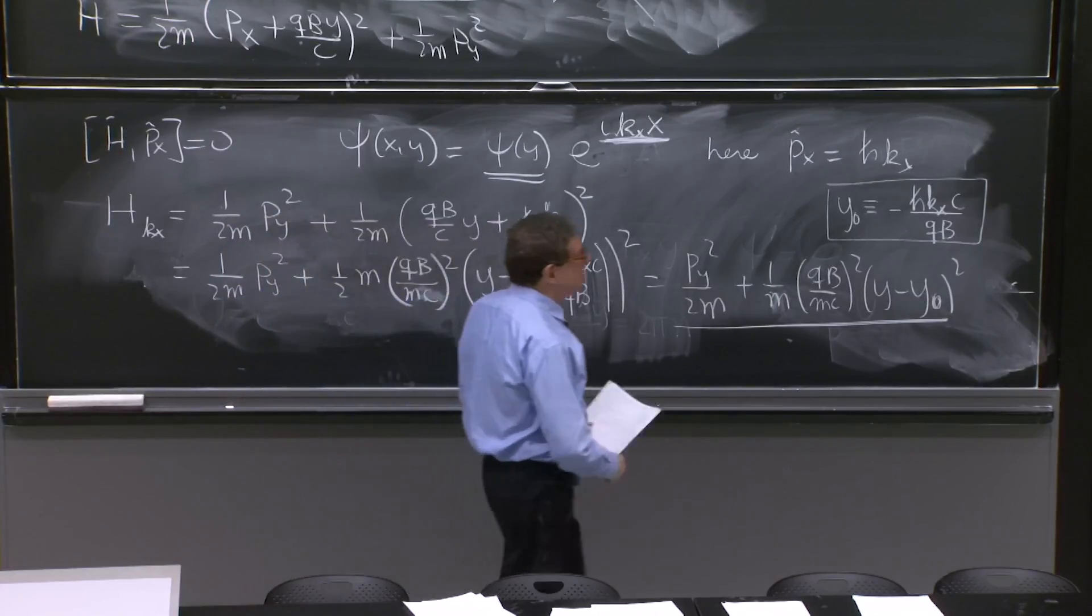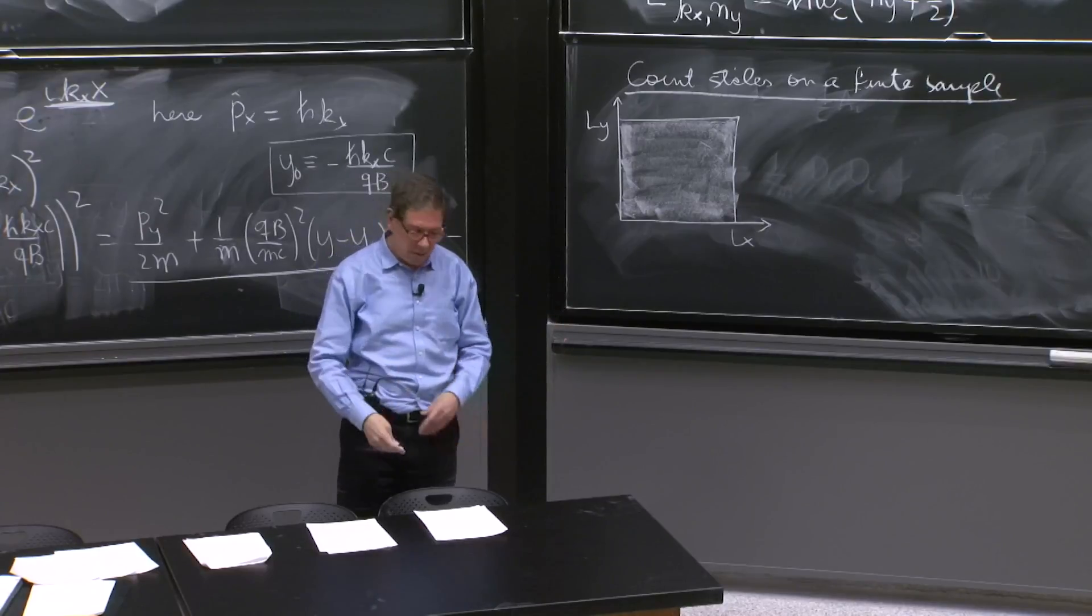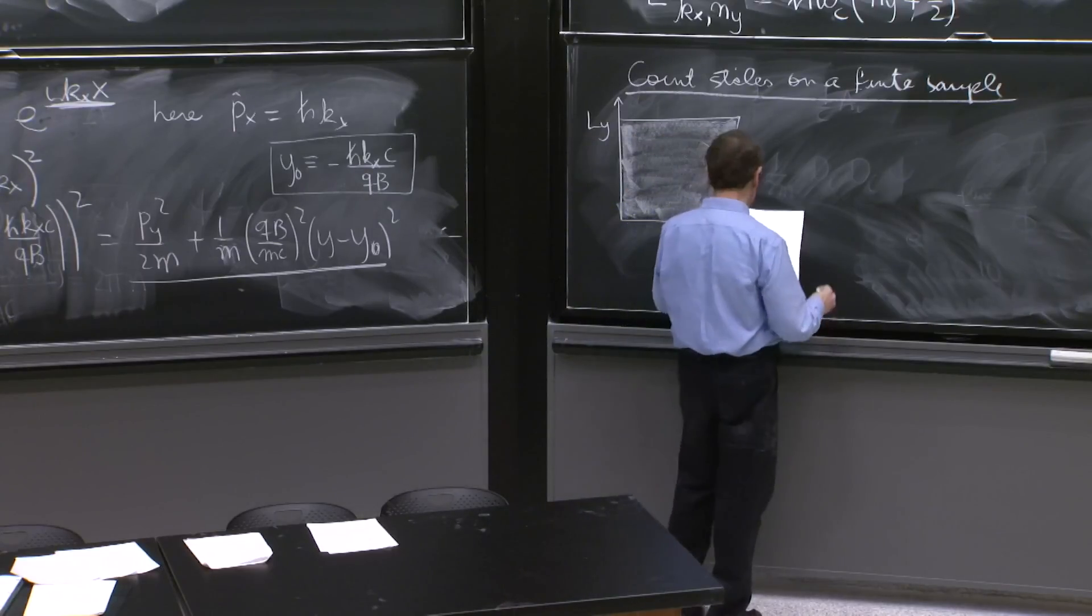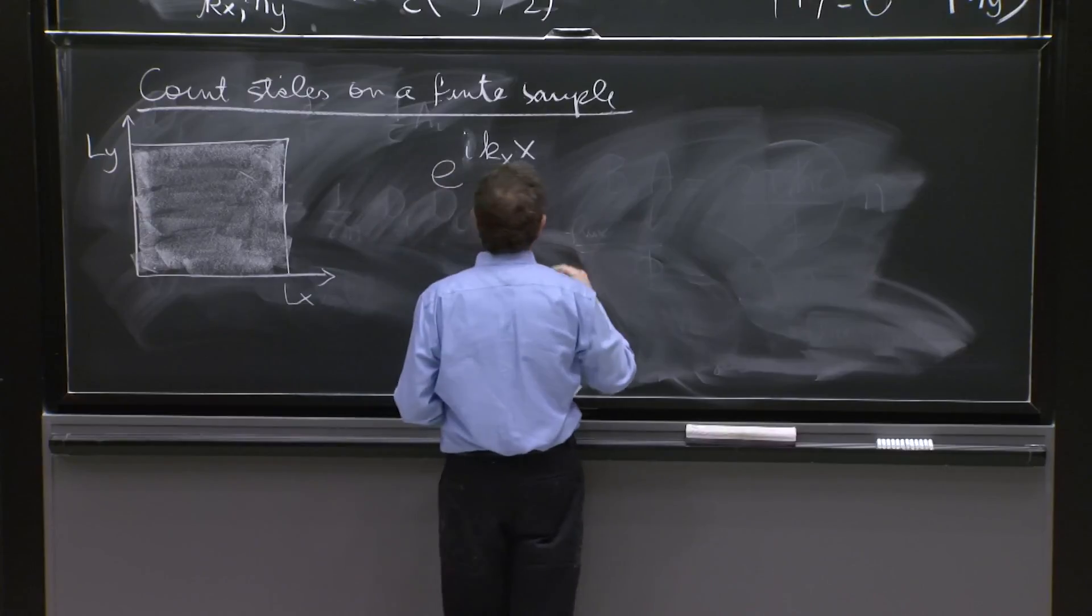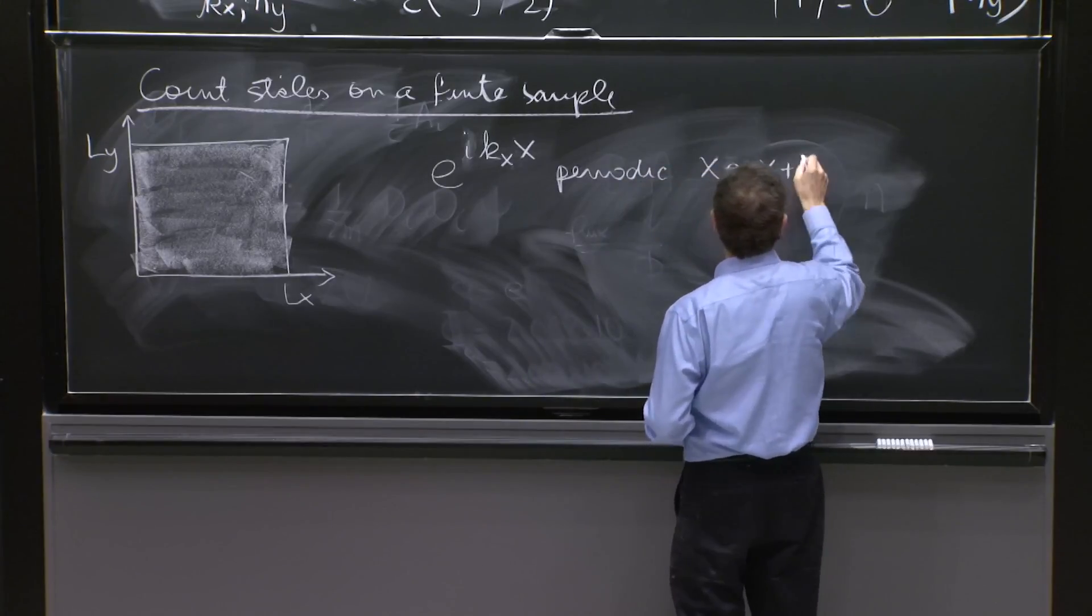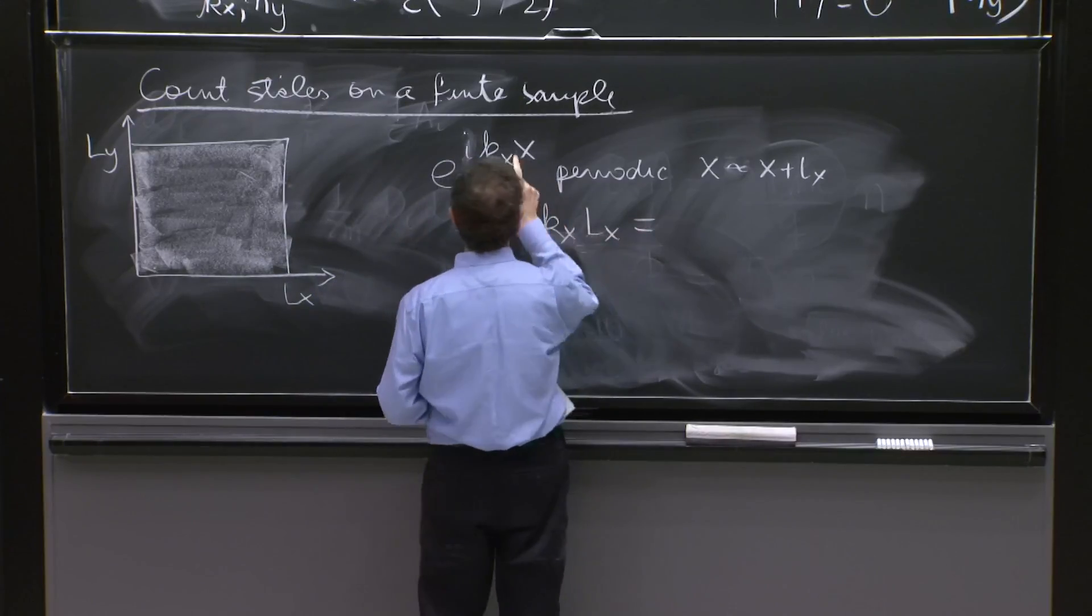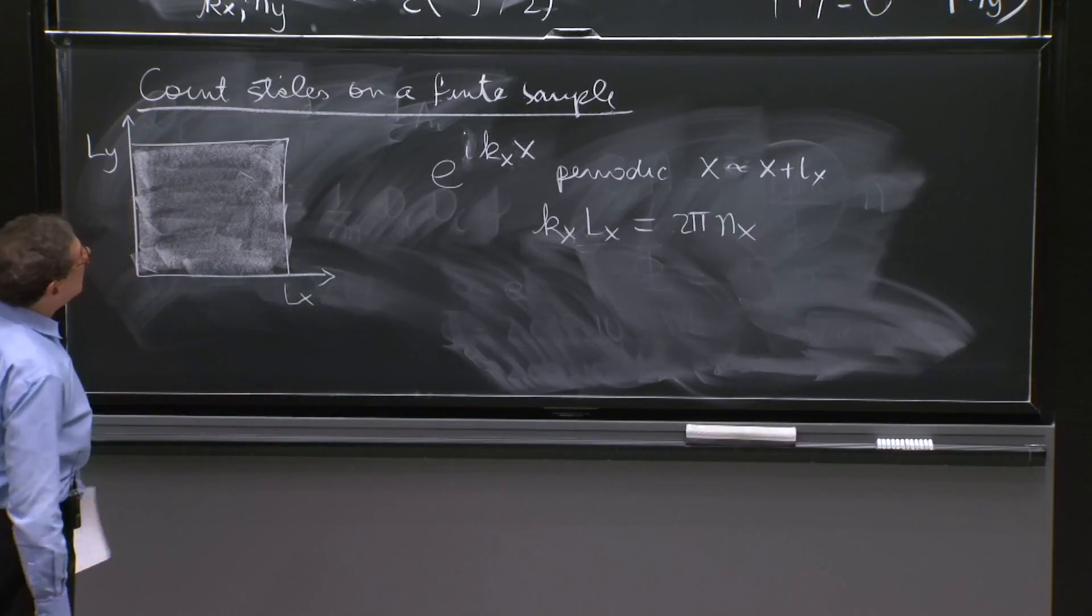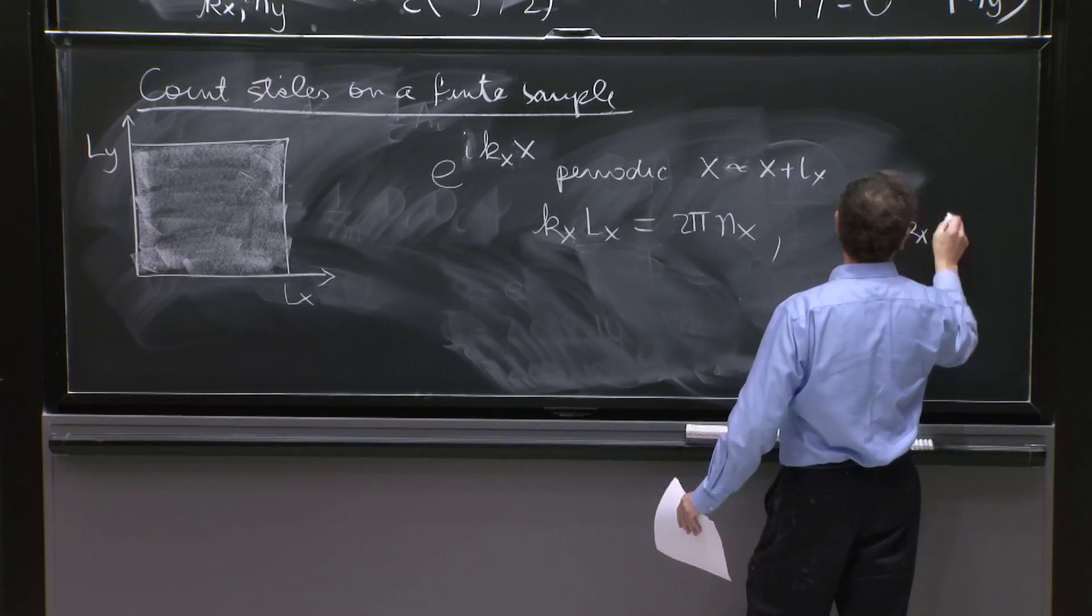In general, if you're thinking of very large boxes, which is the case here, it doesn't matter much whether you impose periodic or vanishing boundary conditions or anything. Essentially, a large number of states, it makes no difference. And so we quantize in x. So we want e^(ik_x*x) to be periodic under x goes to x plus L_x. So k_x*L_x will have to be equal to a multiple with n_x.